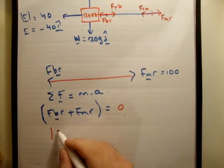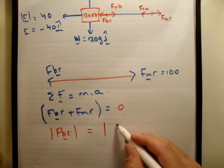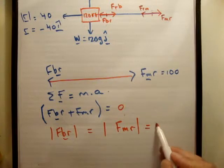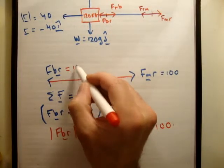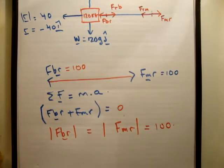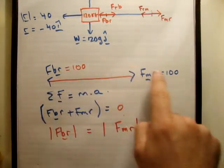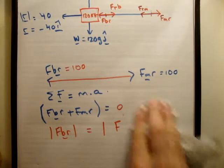Look what happens if that turns out to be zero. We're going to get that the magnitude of the force of the boat on the rope is equal in magnitude to the force of the man on the rope. And we know the force of the man on the rope is 100. So what we can say is that we have 100 being pulled left and 100 being pulled right. But these are not action-reaction pairs. That's the very important thing here.